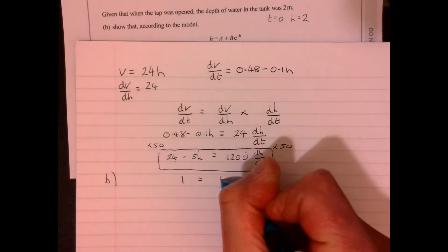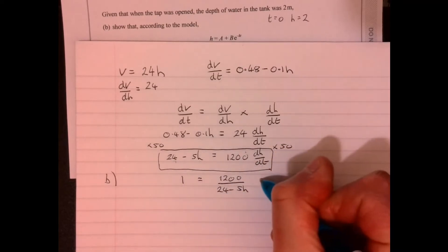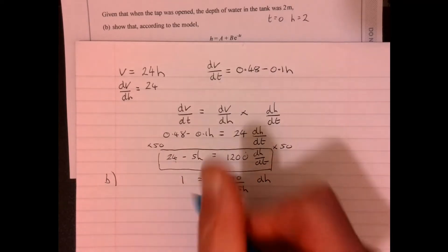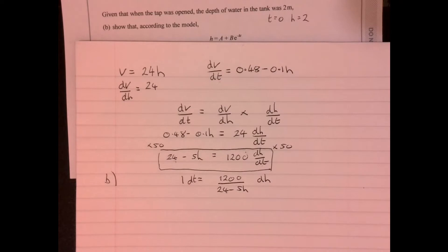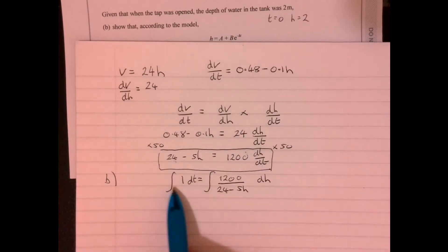If I divide both sides by 24 minus 5h, we get this. And then I'm effectively going to multiply by the dt. There we go. What's that remind you of? That reminds you of a bit of integration. I'm going to integrate this side with respect to t, this side with respect to h. That's what we can do. Now, I suppose the problem with these questions is you don't always recognize that that's what you've got to do. It does take a little bit of practice.